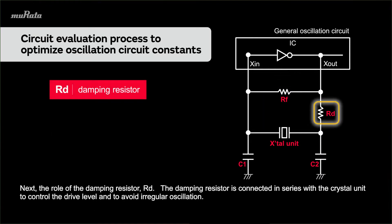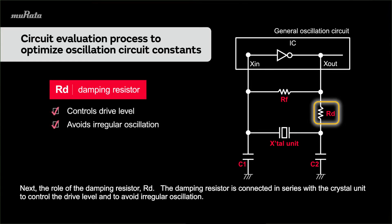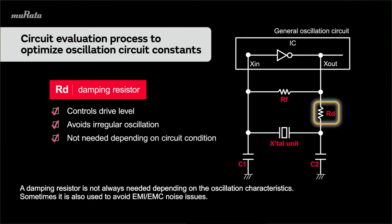Next, the role of the damping resistor RD. The damping resistor is connected in series with the crystal unit to control the drive level and to avoid irregular oscillation. A damping resistor is not always needed depending on the oscillation characteristics. Sometimes it is also used to avoid EMI and EMC noise issues.